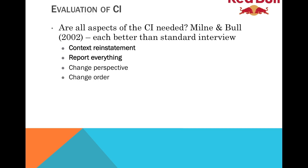Milne and Bull tested the different parts of the cognitive interview - context reinstatement, report everything, change perspective, change order - to see whether they all work and whether any are more important than others. What they found was that if you just use each individual part, each of the four on their own are better than the standard interview on its own - so each part does work. However, context reinstatement and report everything were the more beneficial ones - they actually worked better than the other two. This backs up the idea that the cognitive interview does work over the standard police interview, while also narrowing down which elements matter most.